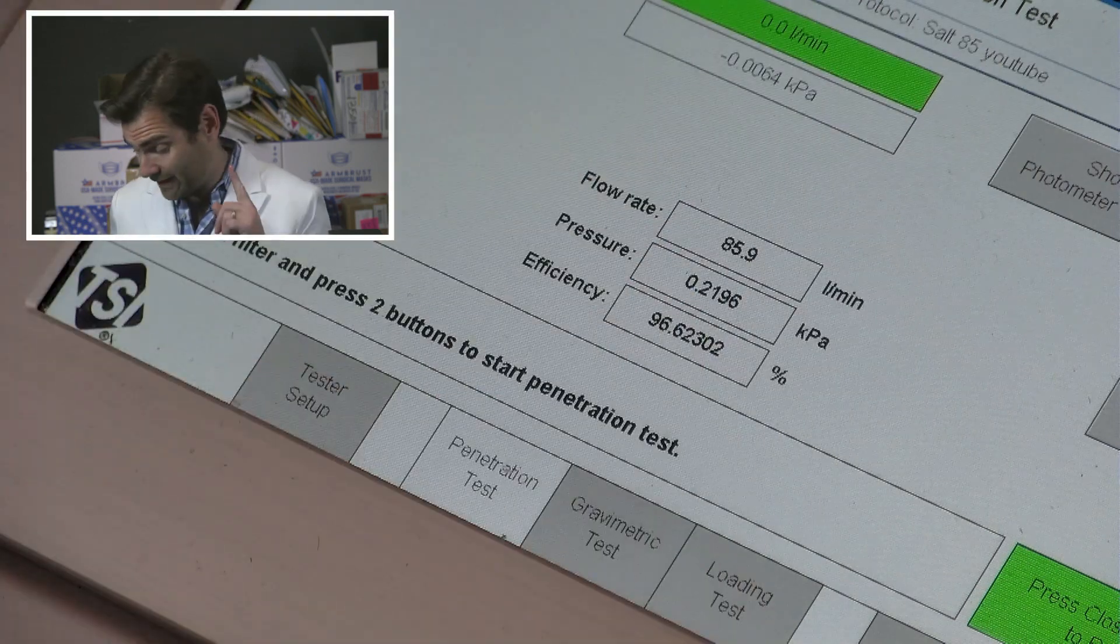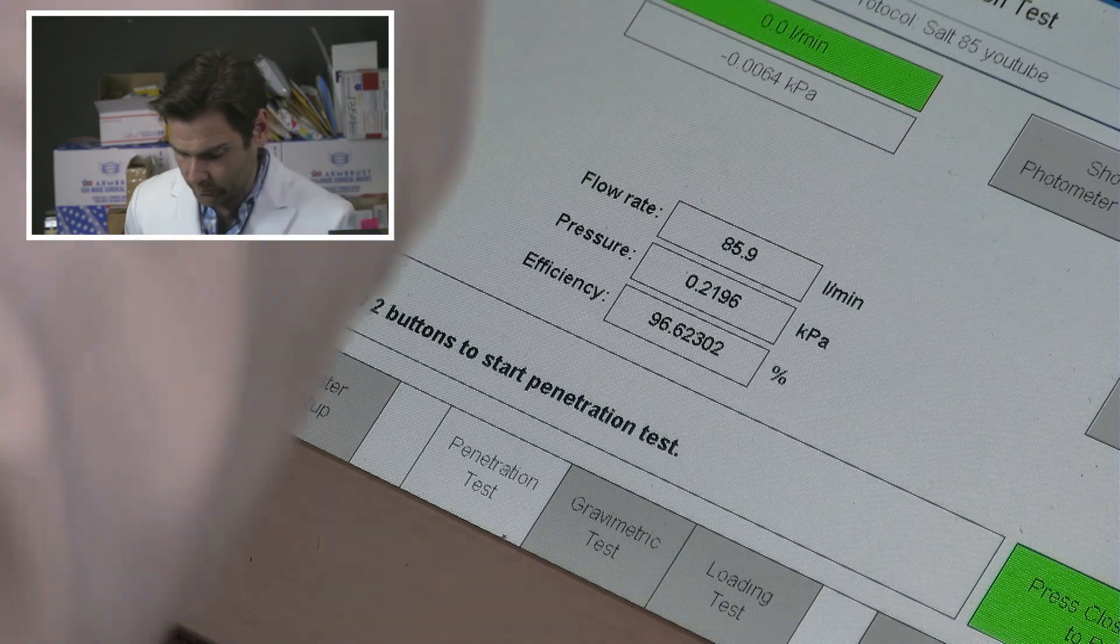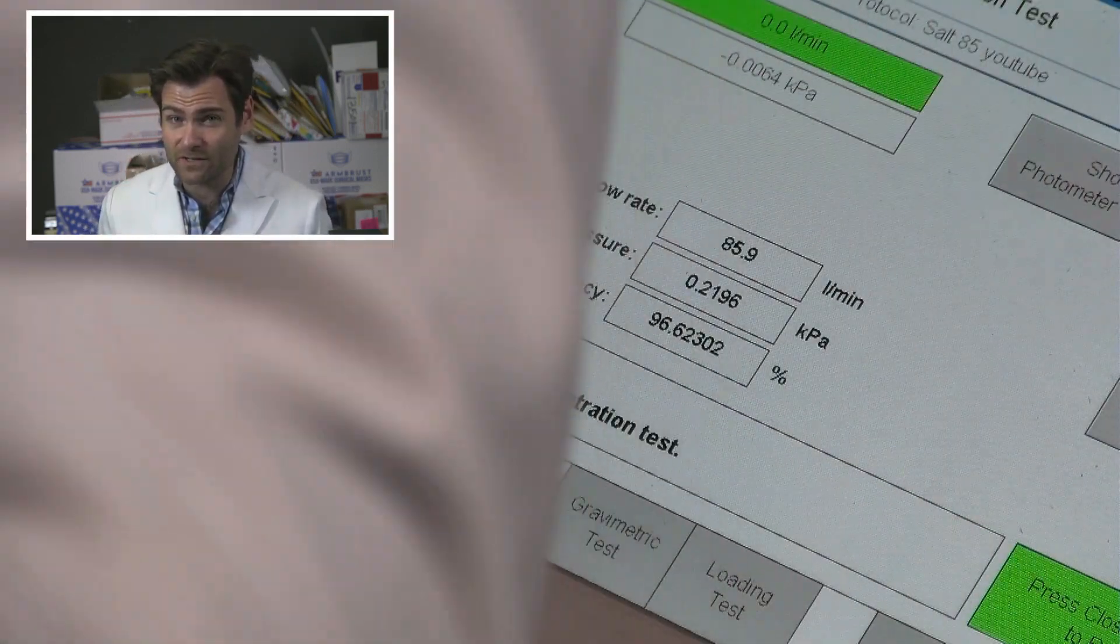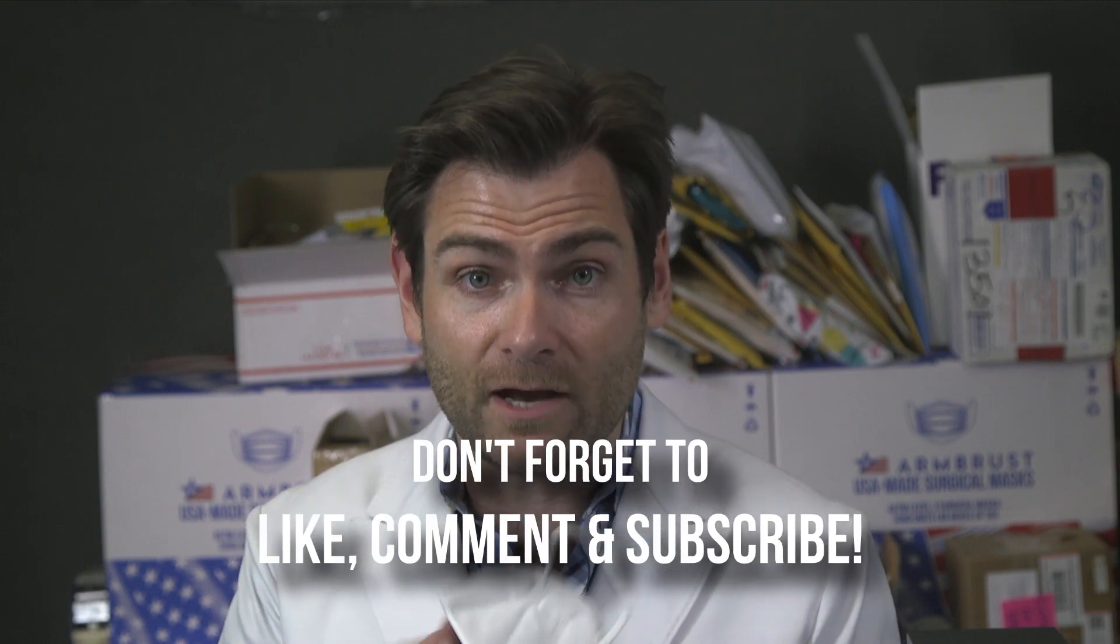Interestingly enough - I say interesting because you'd have to be a major dork to be interested by this - but the 2006 standard does not require you to put the manufacturer name on it. That was added in the 2019 standard and they are saying they're 2006. But why are they using such an old standard? That's weird.